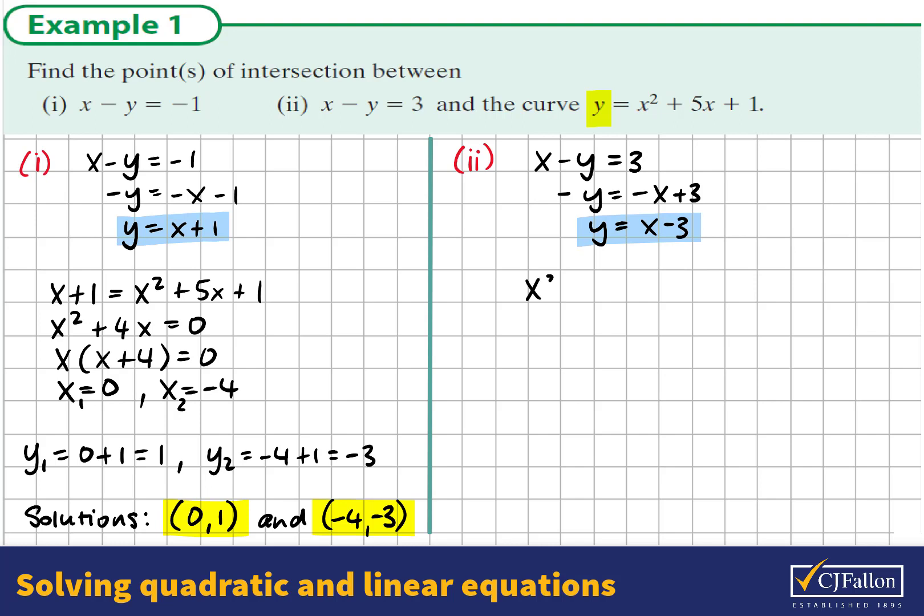Again, I'm going to replace y with x minus 3. So x squared plus 5x plus 1 equals x minus 3. Take x and add 3 to both sides of the equation, giving this quadratic expression. Factorizing this, we see that the factors that work are x minus 2 and x minus 2.